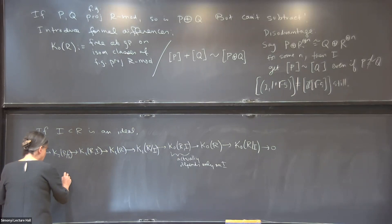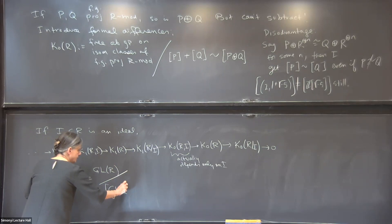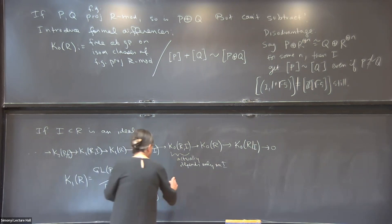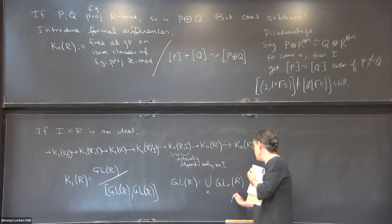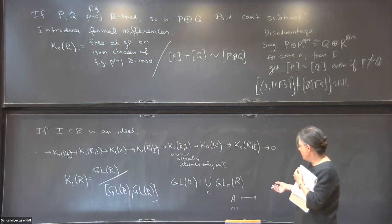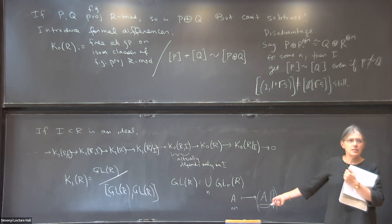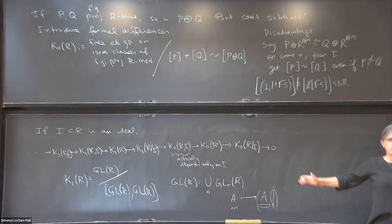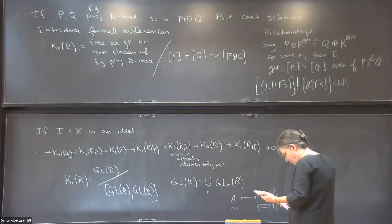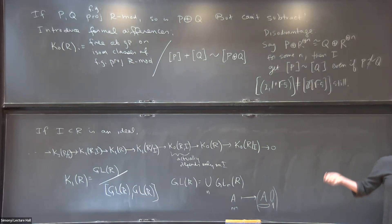K₁(R) = GL(R) / [GL(R), GL(R)], where GL(R) is the union over n of GL_n(R), where an n×n matrix A is regarded as an (n+1)×(n+1) matrix by sticking zeros and then a 1 in the corner. So what you end up with is all things that have a square invertible matrix on the top left and an infinite identity matrix below with zeros elsewhere. K₂ was more complicated, K₃ more so — it was clearly part of the same theory but it wasn't clear where it was going.